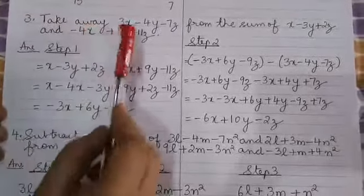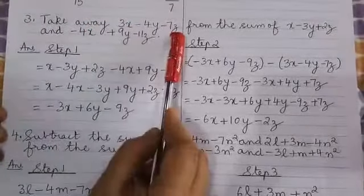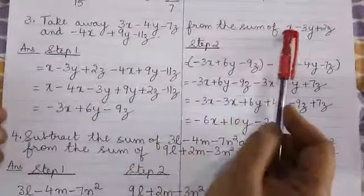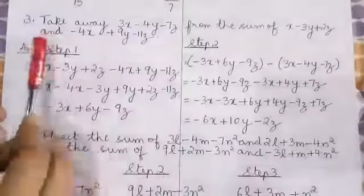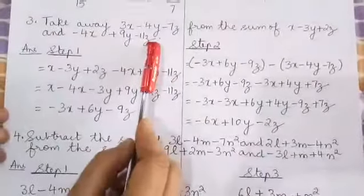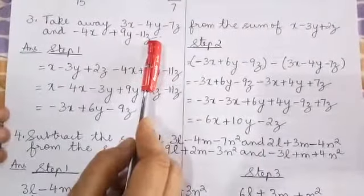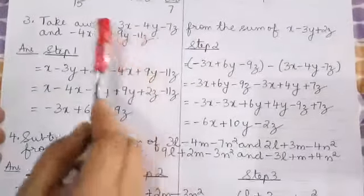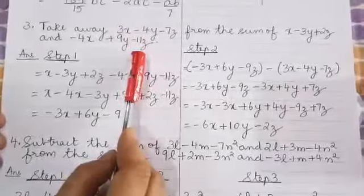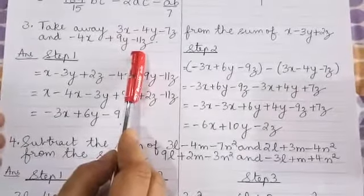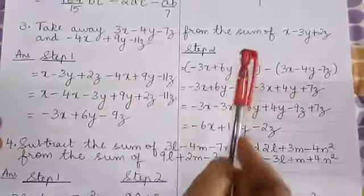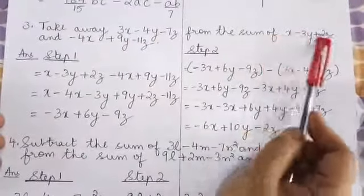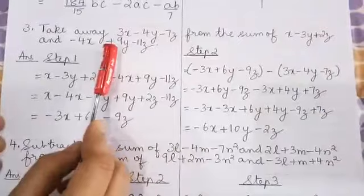Take away this expression from the sum of this and this expression. We need to work this answer in two steps. First, let's find the sum of these two expressions.